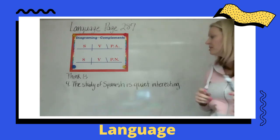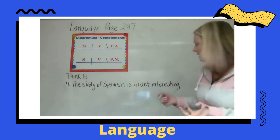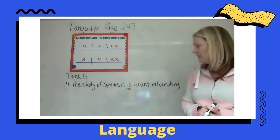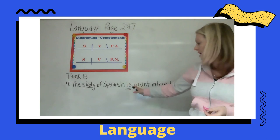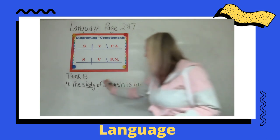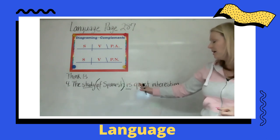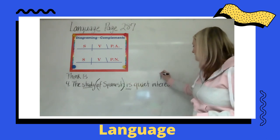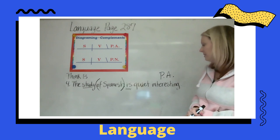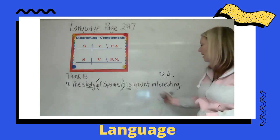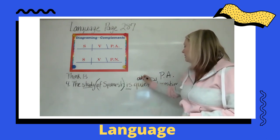Number four says 'The study of Spanish is quite interesting.' Let's find out what our verb is — 'is.' And what is the subject? 'Study.' What makes 'of Spanish' different? It's not 'is Spanish' — it's 'is study.' So 'of Spanish' is our prepositional phrase, because 'of' is a preposition word. 'Study is interesting' — there's our predicate adjective again, describing that the study is interesting. And 'quite' would be describing 'interesting,' meaning it's also an adjective.